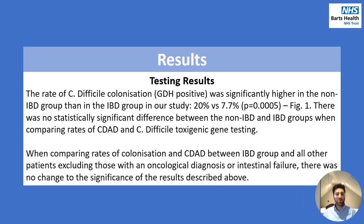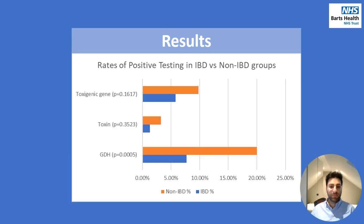So, what did we find in the tests themselves? Interestingly, the rate of C. difficile colonisation — those being GDH positive — was actually significantly higher in the non-IBD group than the IBD group, with 20% in the non-IBD group versus 7.7% in the IBD group, a statistically significant difference. However, there was no statistically significant difference between the non-IBD and IBD groups when looking at rates of active disease and toxigenic gene presence. Further analysis excluding patients with oncological diagnosis or intestinal failure showed no change in these results. The graph clearly shows the GDH positivity rate is much higher in the non-IBD group.